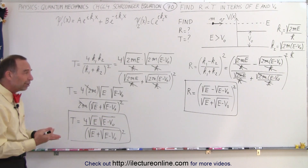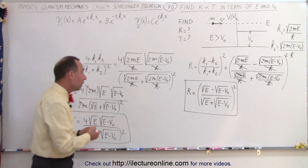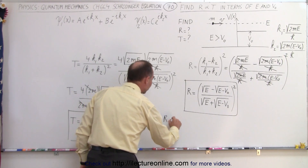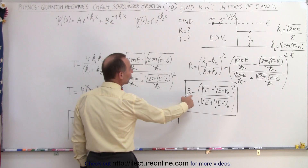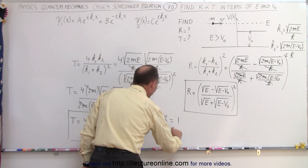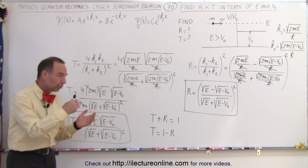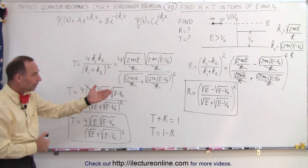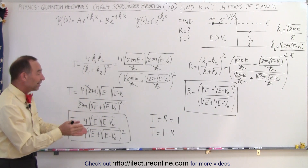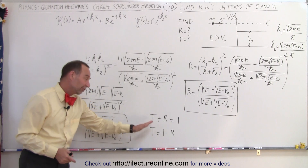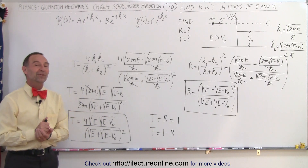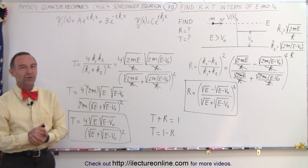Once you calculate one coefficient, you can easily find the other, because the transmission coefficient plus the reflection coefficient must add up to one. So if you calculate R first, then T simply equals one minus R. You don't have to go through both derivations, but if you want to verify your answer, you can calculate the other coefficient independently to confirm you got the right number. In the next videos we'll show some examples.